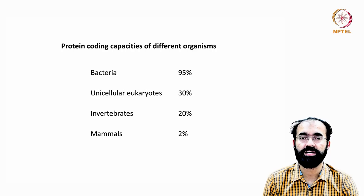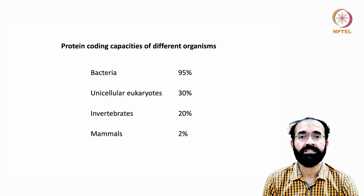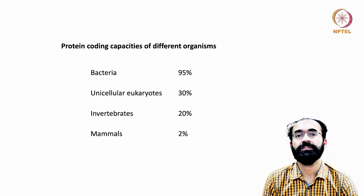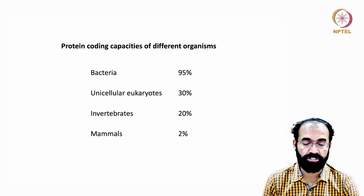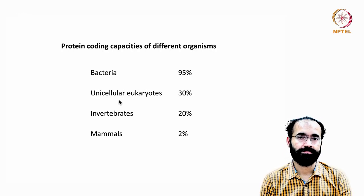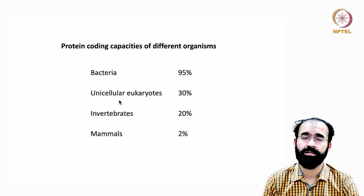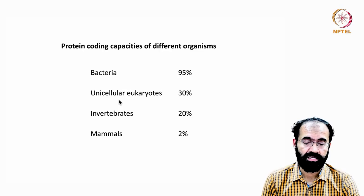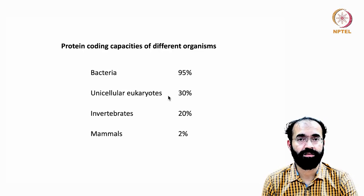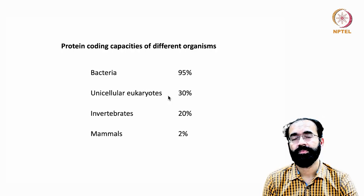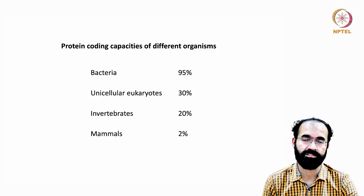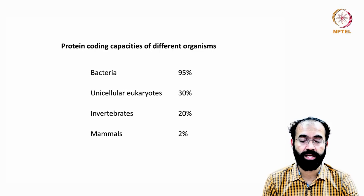This doesn't mean bacteria do not require non-coding RNA — of course they require ribosomal RNA, transfer RNA, etc. Nonetheless, the protein coding capability is high and distributed almost completely across the genome. In unicellular eukaryotes such as yeast and several varieties of fungus, they have a proper nucleus — 'eu' means real, 'karyon' means nucleus — unlike bacteria. That is why we call them eukaryotes.